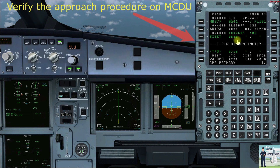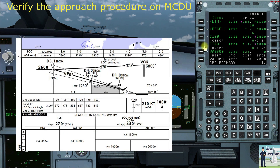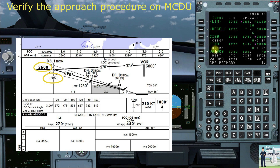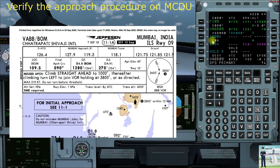Now let us verify our approach procedure on the MCDU. Going to the flight plan page, we can see that at point FOX India 09 we are at our platform altitude of 2600 feet, wherein we begin our 3-degree descent on a course of 090.